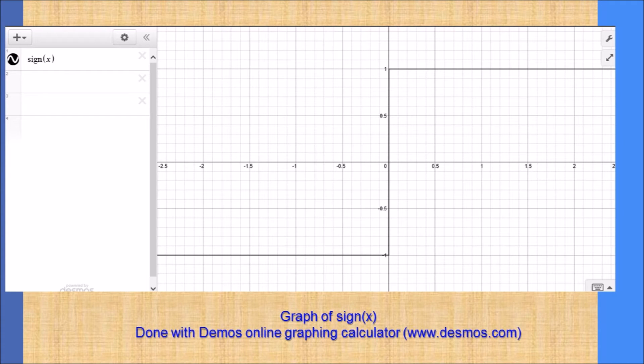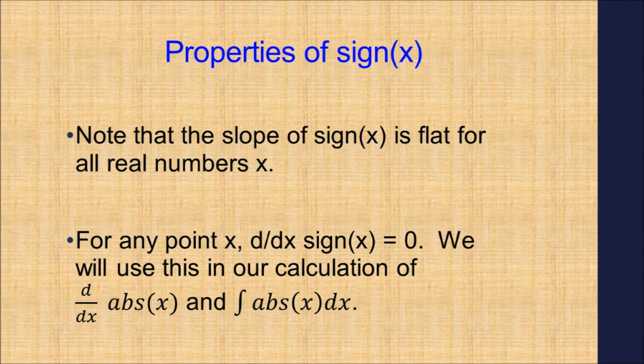And this is what the graph of the signum of x looks like. Often, the signum function is symbolized by SIGN of x. Regarding the signum function, note that the slope is flat or 0 for all real x. Hence, the derivative of the signum function is 0.